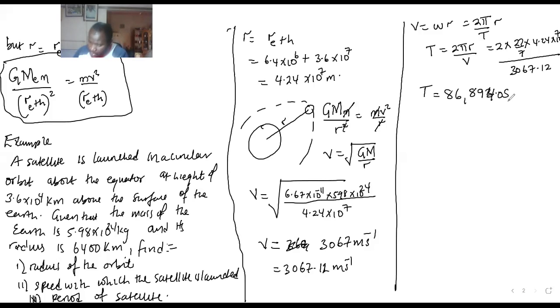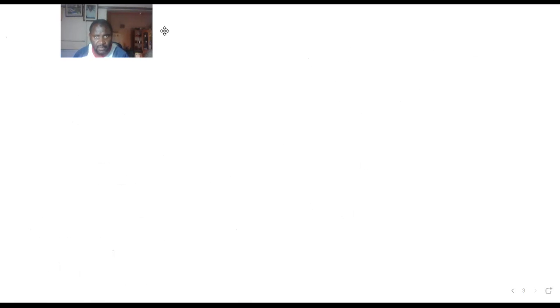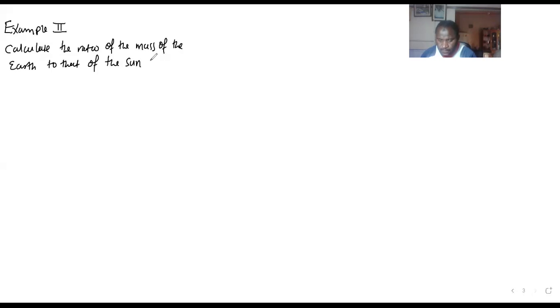Take that screenshot — we have one more example and then we close. We shall start from there next time. So this question is quite long; let me put it on this other page as Example 2. Calculate the ratio of the mass of the earth to that of the sun.